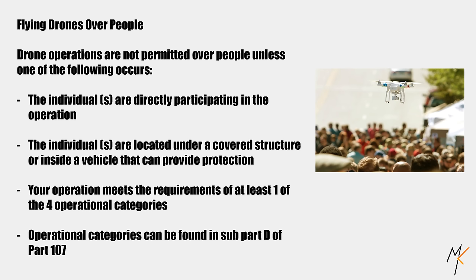Flying your drone from a car or boat: you are allowed to fly your drone from a moving car or boat. However, it must be conducted in a sparsely populated area with very few to no people. You must maintain visual line of sight and constantly communicate with your crew. You can't fly recklessly, and the person flying the drone cannot also be driving the car — it has to be operated by a passenger. You also cannot conduct this type of operation from an actual aircraft, so no flying drones while you're flying in an airplane.